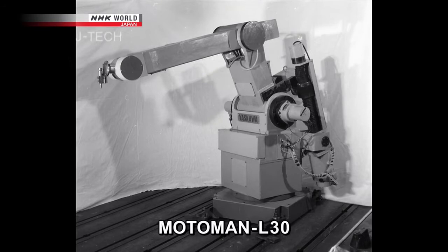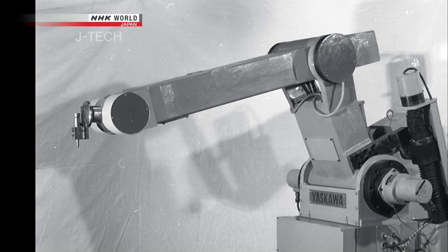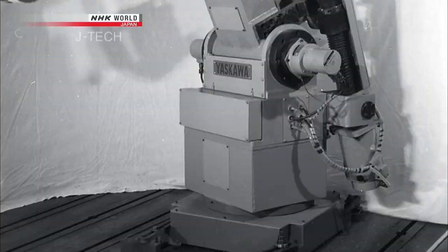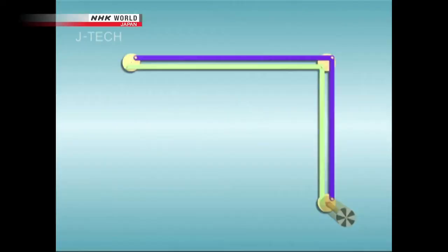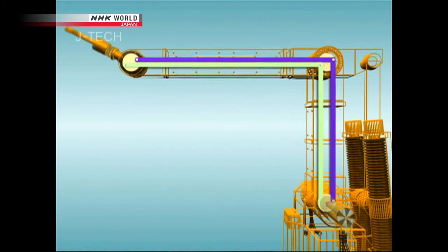It took a year for Yasukawa to complete a prototype. It was called Motoman L-30. Its arm could be fitted with different tools and was designed for either welding or transporting loads of up to 30 kilograms. In keeping with ASEA's robot design, engineers placed the motors in the arm's base. A combination of steel rods and pulley systems inside the arm transferred power from the motors to the arm's axes and tool coupling at the tip.